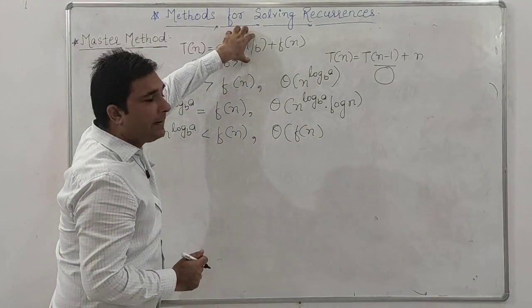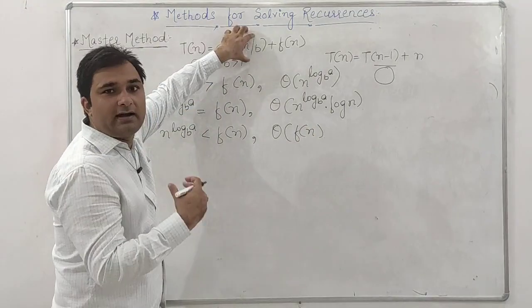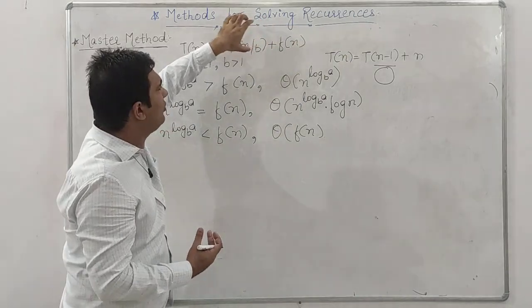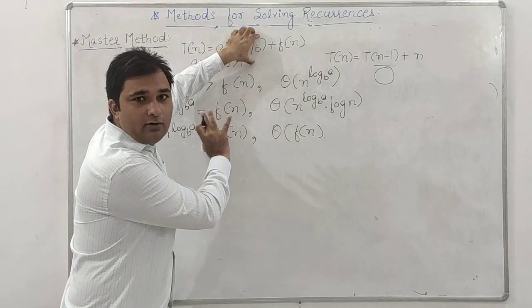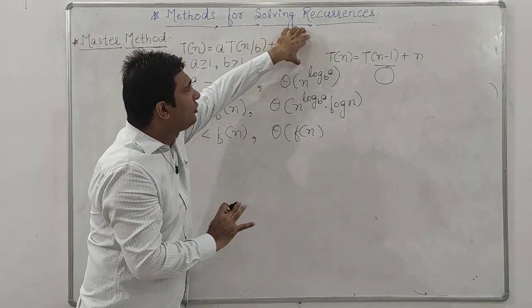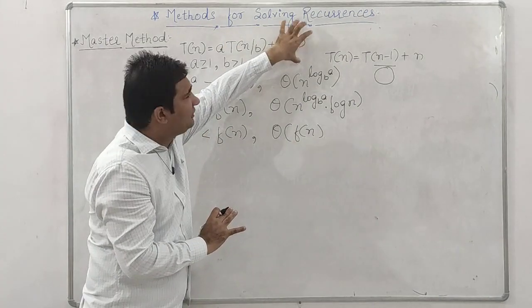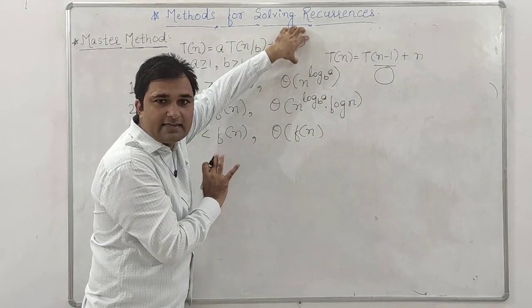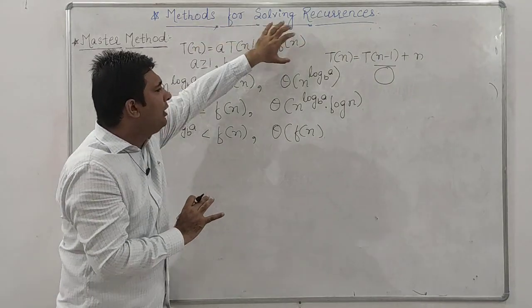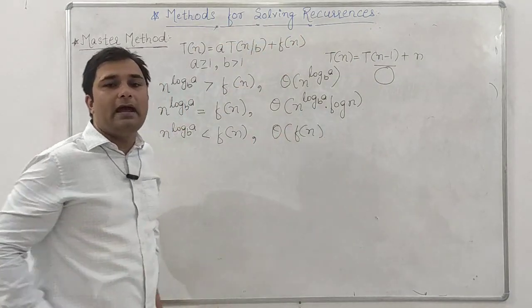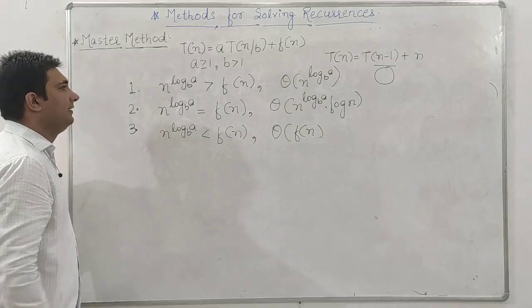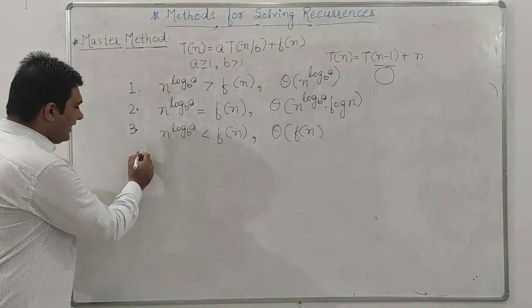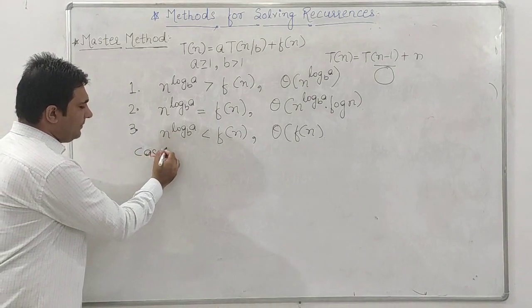Intuitively: if the machine takes more time to compute the recursive part compared to f(n), the complexity is dominated by n^(log_b(a)). If f(n) dominates, the complexity is f(n). If both are equal, we multiply by log n. These are the three summarized cases. Now let's discuss examples for Case 1.